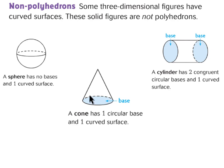A cylinder has two congruent circular bases and one curved surface, which means the bases are circles and it can roll on the curved surface. Some real-world examples of a cylinder would be a can of soda, a garbage can, or a can of soup.